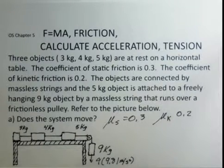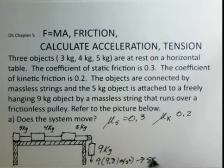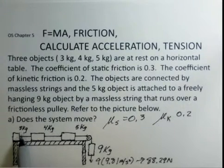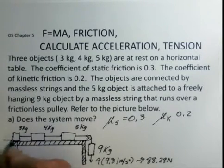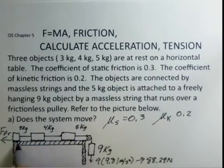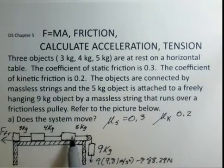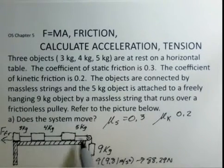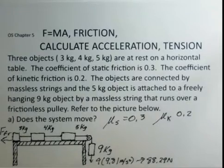The nine kilograms has nine times g (9.81), giving a downward force of 88.29 newtons. Up here, you do not use mass times 9.81 to find the resisting force. Instead, you use friction. There's a friction force for each object on the table. The system is tending to move to the right, so friction acts back to the left.